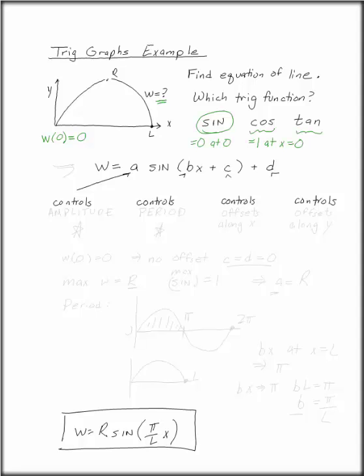We know that every kind of sine function can be written as w = a sin(bx + c) + d, where a controls the amplitude, b controls the period,